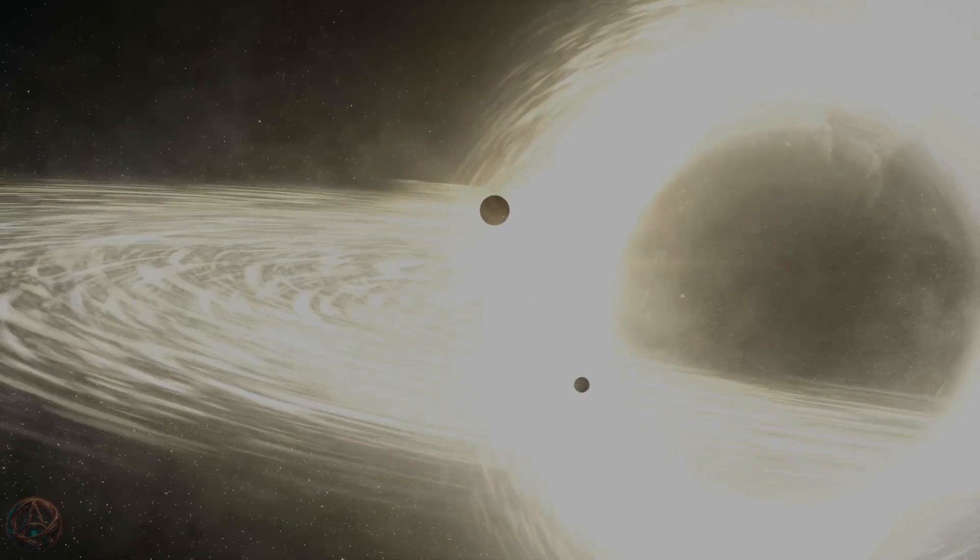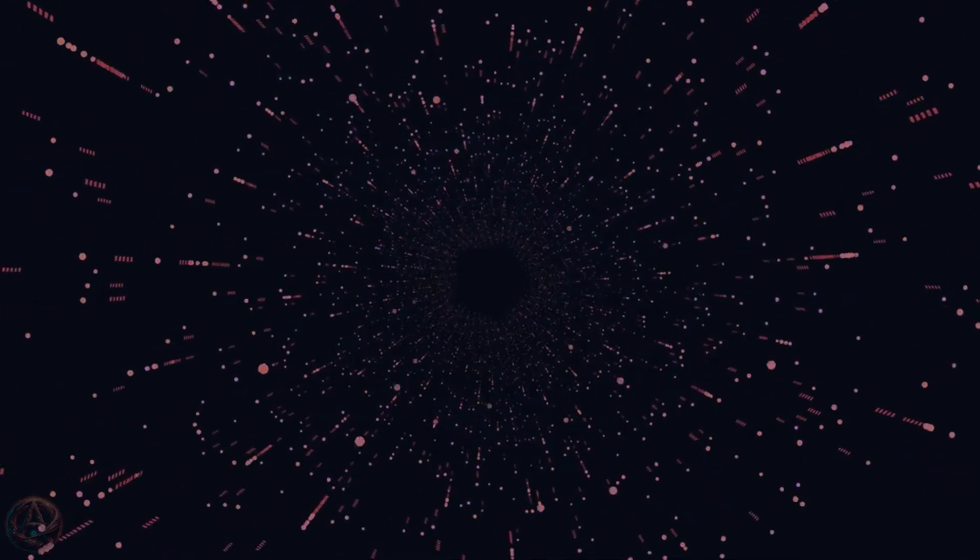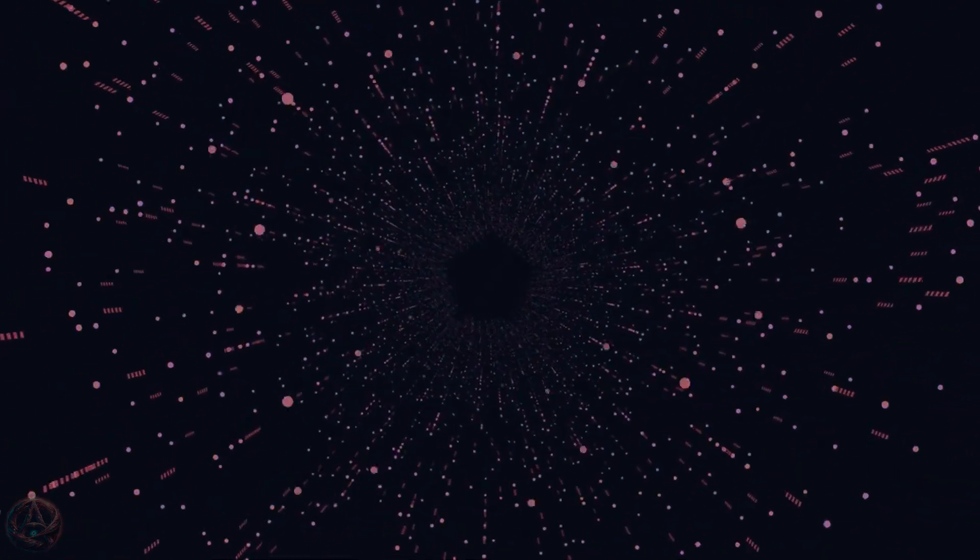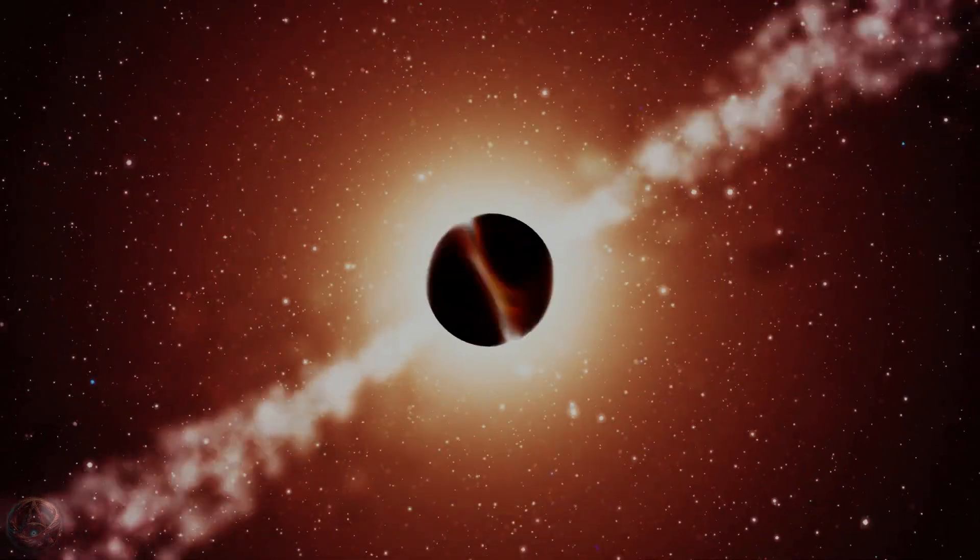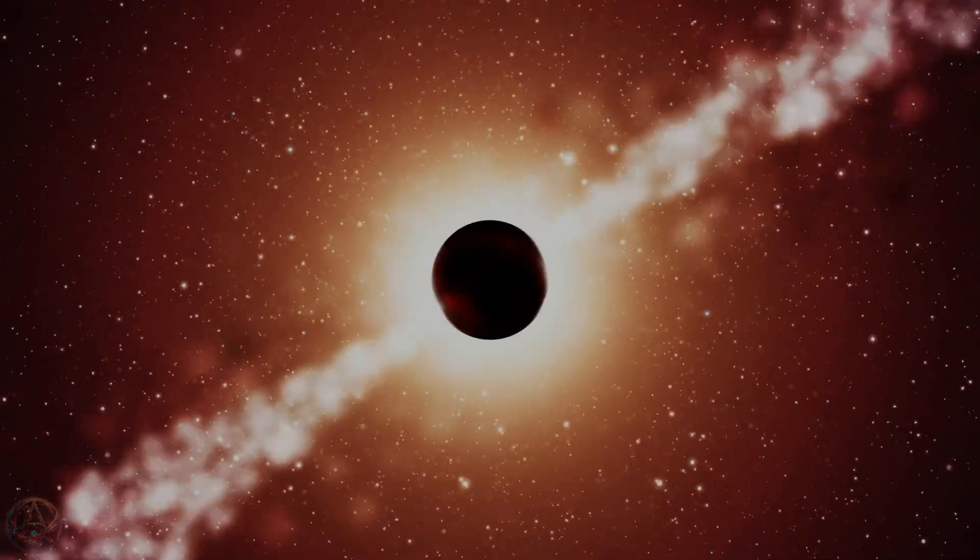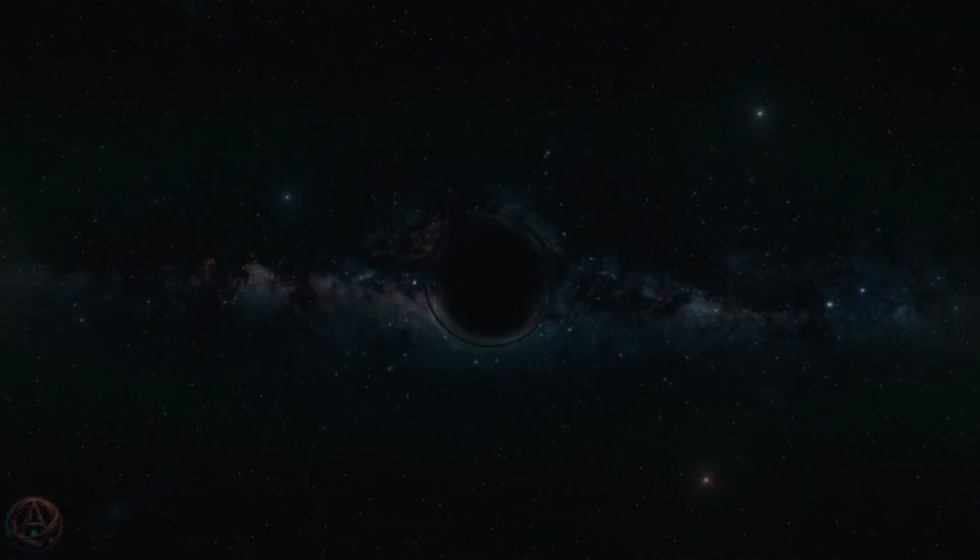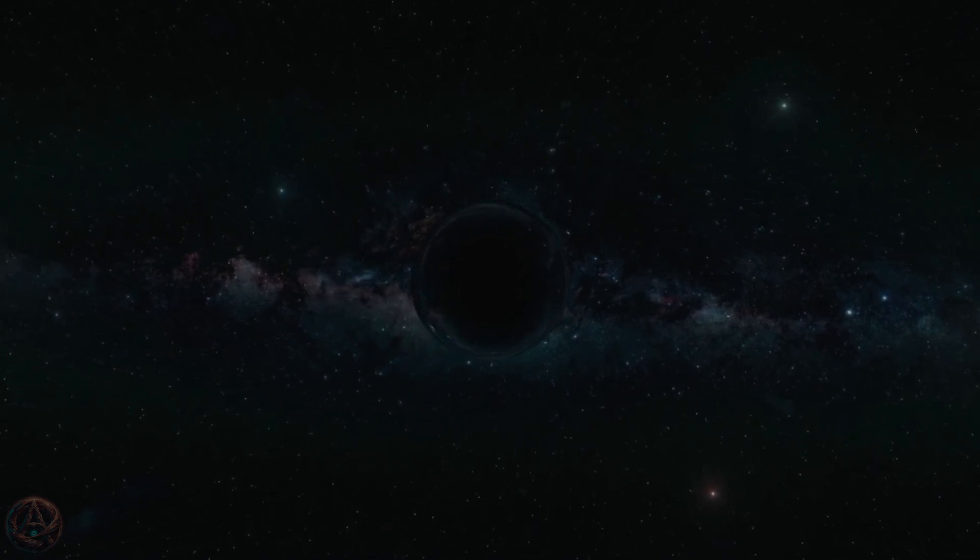Think about it. Black holes have event horizons, boundaries beyond which nothing can escape. And our own universe appears to have a similar boundary, the cosmic horizon. Beyond a certain point we can't see anything because space is expanding faster than light can travel. Could this be the same principle at work? Could we be trapped inside a larger structure, something that exists beyond our perception? The implications of this theory are beyond mind-blowing. If our universe is the interior of a black hole, then that means there is an outside, a reality, beyond our observable cosmos. And just as black holes in our universe might connect to others, our universe might be a bridge to something even greater.